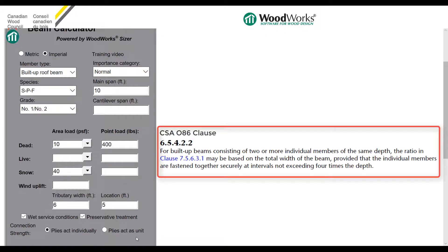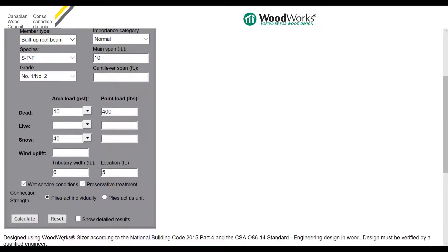The last step is to specify connection strength of the plies. This option is only applicable for built-up beams, where you can select between plies act individually and plies act as unit. If there is sufficient connection between individual plies, you may want to toggle plies act as unit. It is more conservative to pick plies act individually. Lastly, let's scroll down and click calculate.